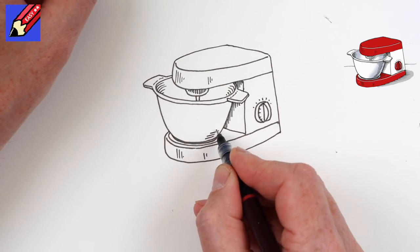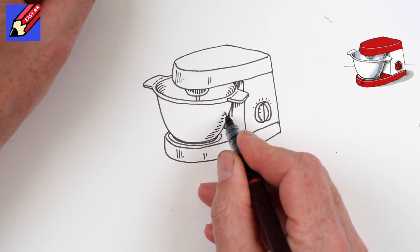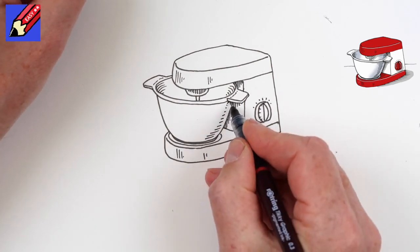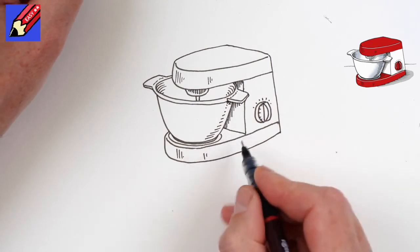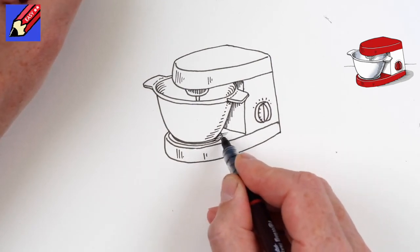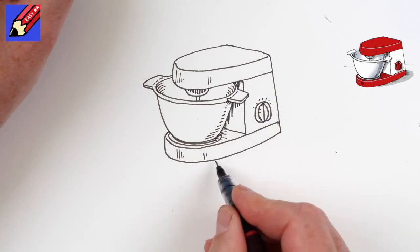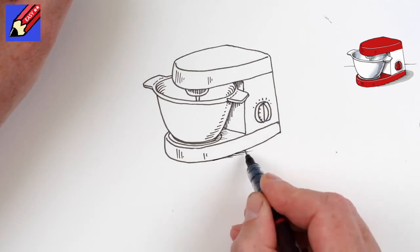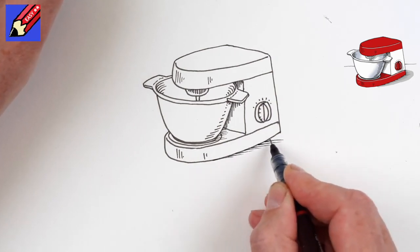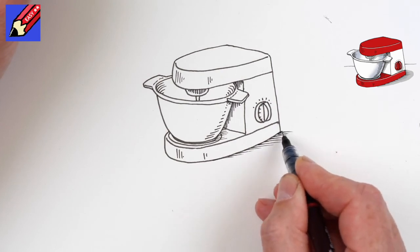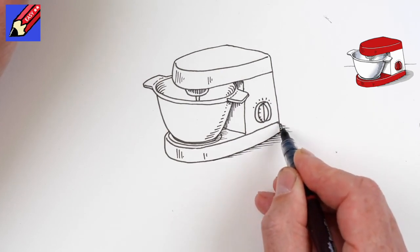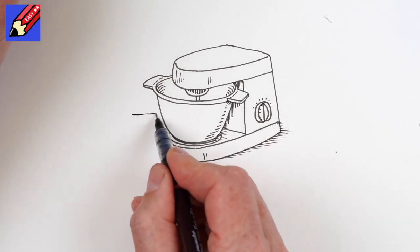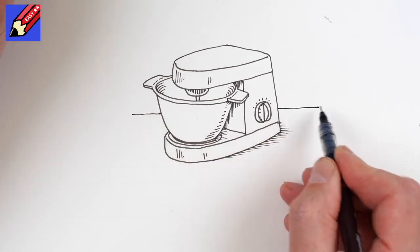On the bowl I'm just going to put some little bits of shading maybe a bit underneath the handle there and then some shading underneath the bowl as well and we can put some shading on the table which helps to put the machine on the worktop we can put the edge of the worktop like that.